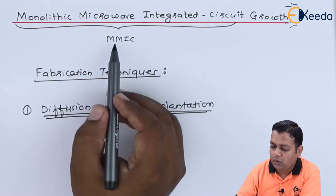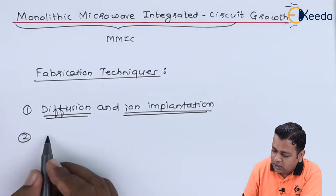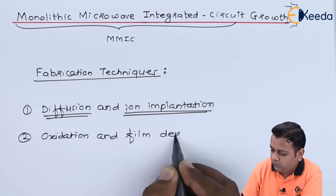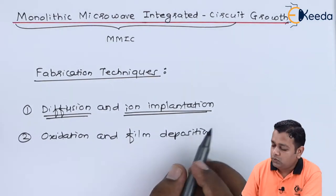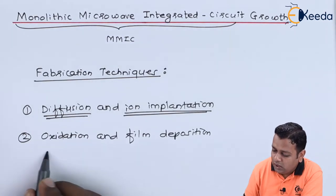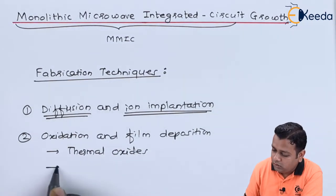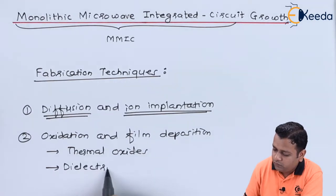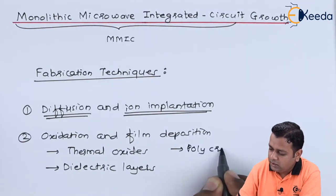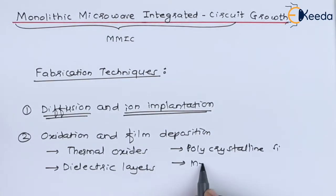The next fabrication technique is oxidation and film deposition. So for oxidation and film deposition there are four groups of films that may be present here. So here we have the first one to be the thermal oxides. The second group is the dielectric layers. Whereas the third one can be polycrystalline silicon, and lastly the fourth one are nothing but the metal films.